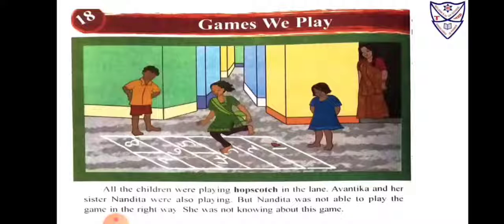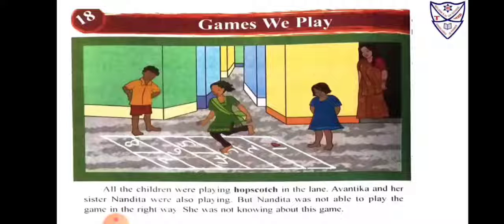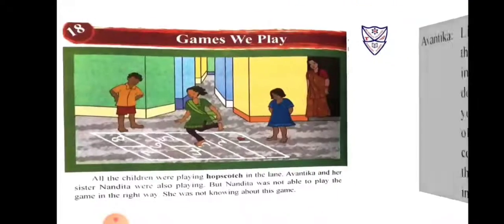All the children were playing hopscotch in the lane. Abantika and her sister Nandita were also playing. But Nandita was not able to play the game in the right way — she did not know about this game.